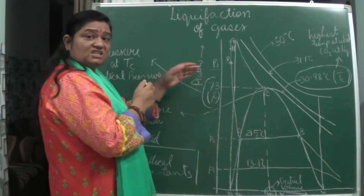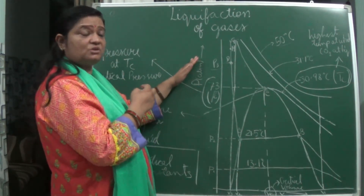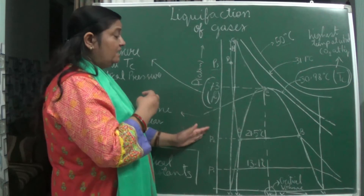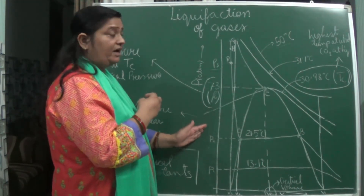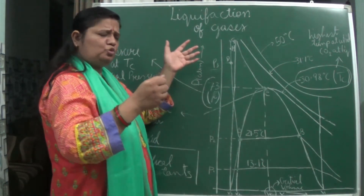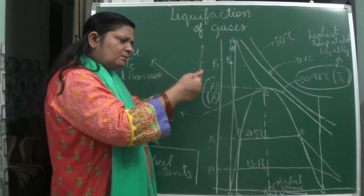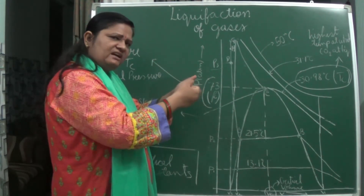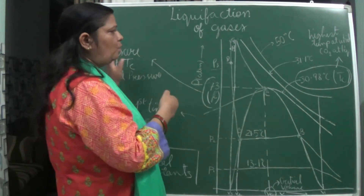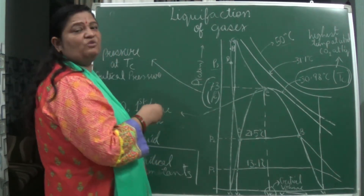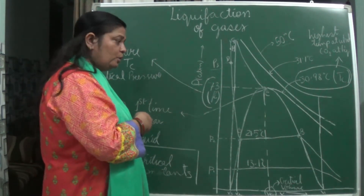Initially, when pressure is increased too much, the gaseous form doesn't liquefy. What happens is when too much pressure is applied, the molecules try to repel each other and it will exist in the gaseous form.